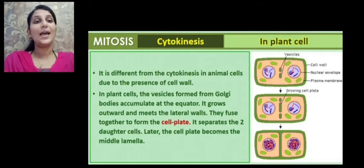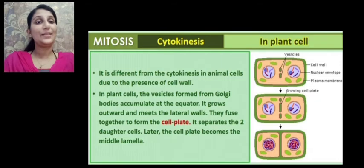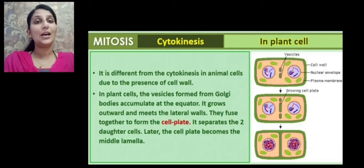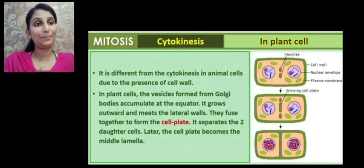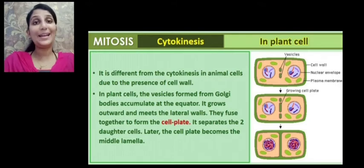This forms a cell plate. The cell plate separates the two daughter cells. The cell plate is formed by the accumulation of vesicles which grow and join towards the plasma membrane. Later, this cell plate forms the middle lamella which is seen between two adjacent plant cells.